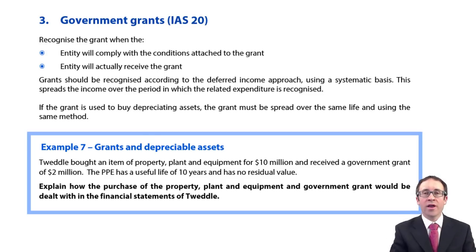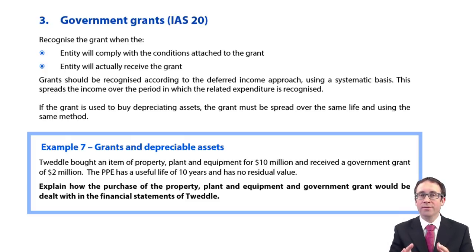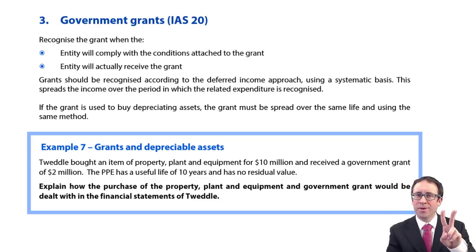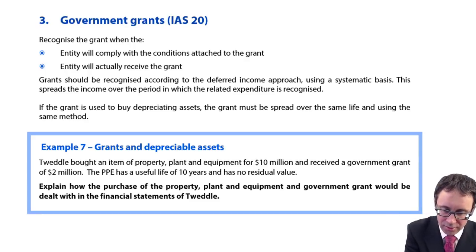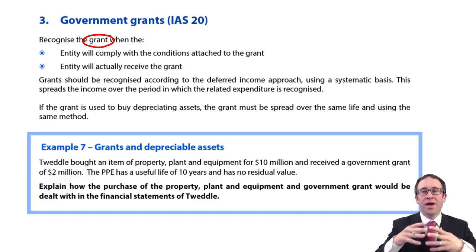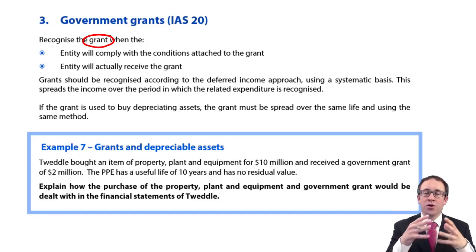Let's look at the third aspect of this chapter with regard to another accounting standard linked to non-current assets. This one is government grants, covered by IAS 20. Government grants are effectively split into two aspects, and the focus here is on the actual grant itself — the physical accounting of the cash that you receive.